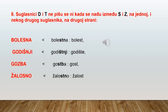Suglasnici D i T se ne pišu nikada se nađu između suglasnika S i Z na jednoj i nekog drugog suglasnika na drugoj strani. A evo i primjera: bolesna, godišnji, gozba, žalosno.